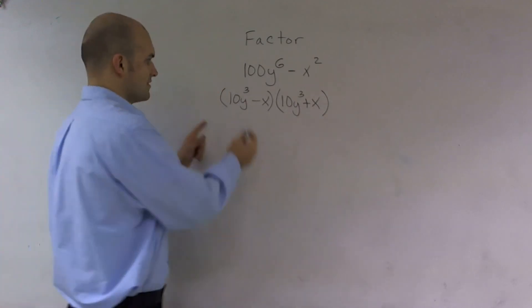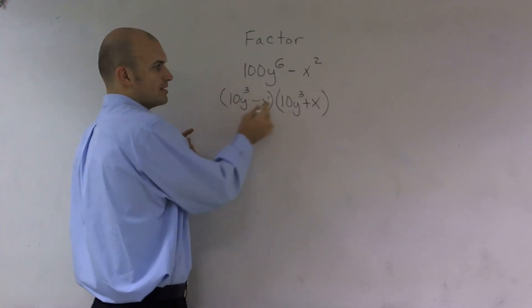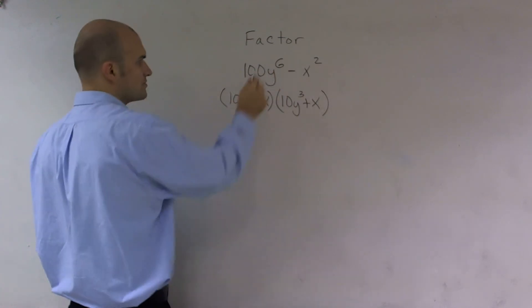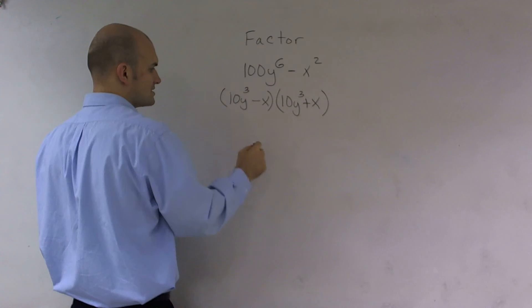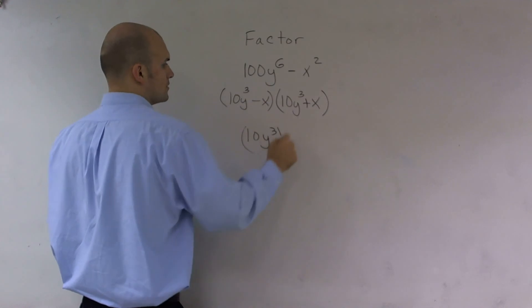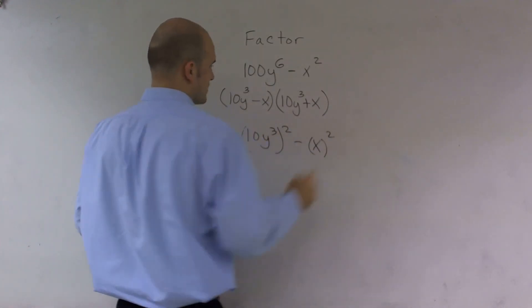And the reason why is this is what we essentially call a square. These two numbers, this can actually be rewritten as a square number. This particularly can be rewritten as 10y³ squared minus x².